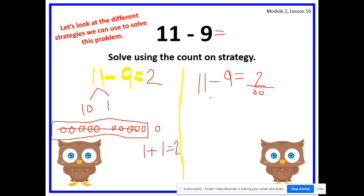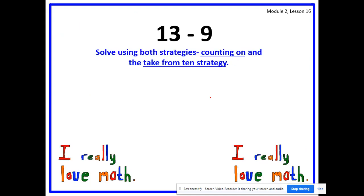Let's try another one. Erase your whiteboard or find the next blank space on your sheet of paper. Here we have 13 minus 9. We're going to solve using both strategies — counting on and the take from 10 strategy. Go ahead and divide your whiteboards in half or your paper just like this again.